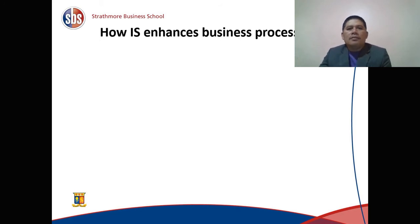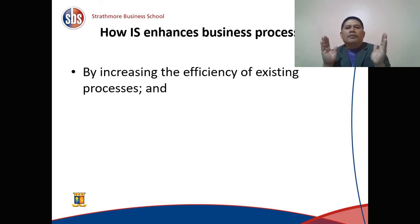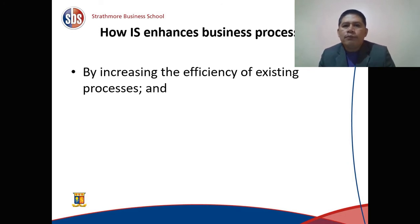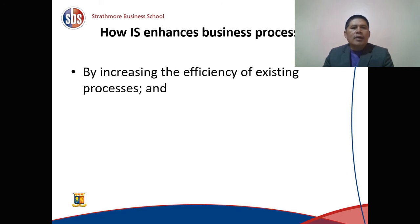So how do information systems enhance business processes? Simply by increasing the efficiency of an existing process. For example, if you go to the bank and there is no computer system, it might take 20 minutes to serve one client. But with a business information system, maybe it will take only two to three minutes. That is increasing the efficiency of an existing process.